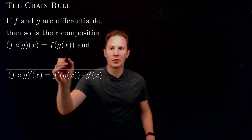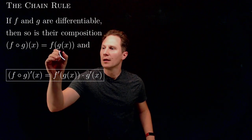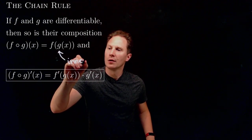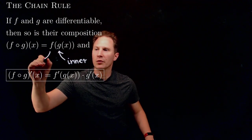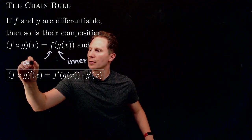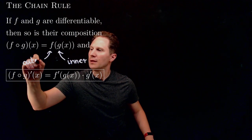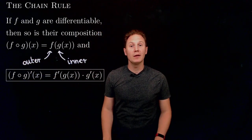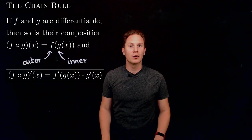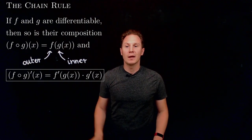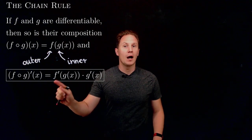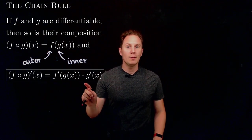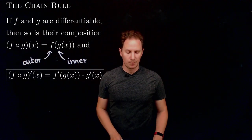In such compositions we call g, the function on the inside, the inner function, whereas f, the function on the outside, is called the outer function. With this terminology we can express what the chain rule says by stating that the derivative of the composition of two functions is the derivative of the outer function evaluated at the inner function, times the derivative of the inner function.